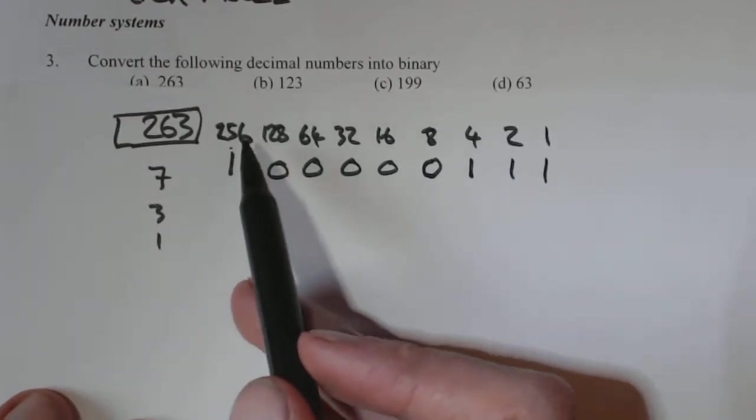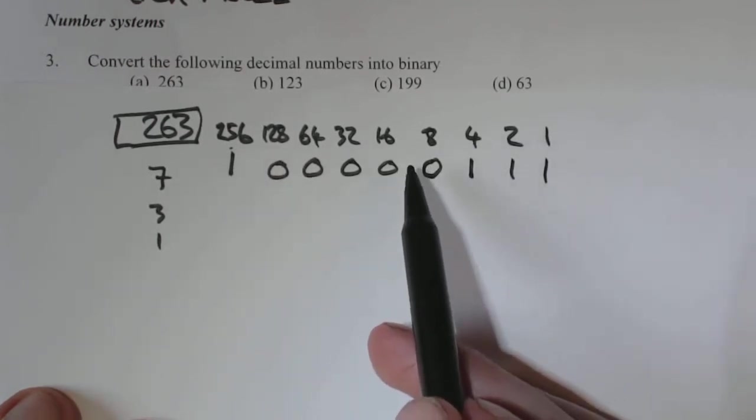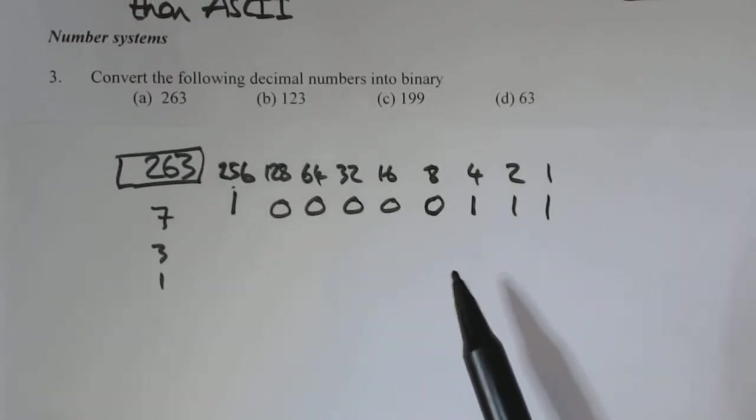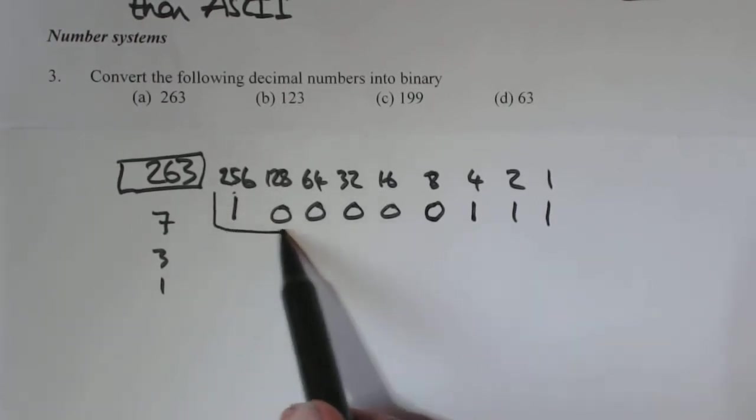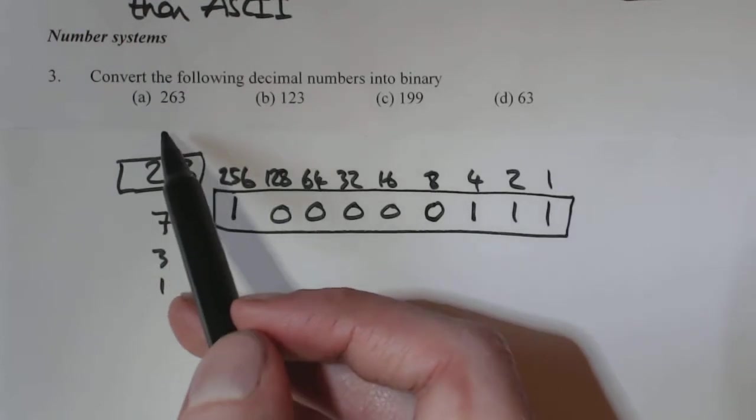So if you add up all these, that should give you 263. So 256 plus 4 is 260, plus 2 is 262, 263. So that's your answer for that one.